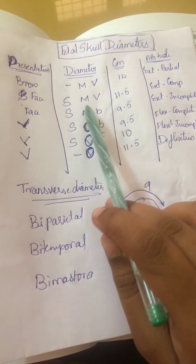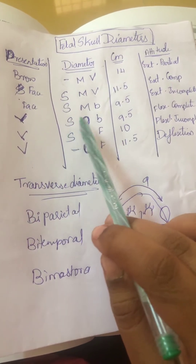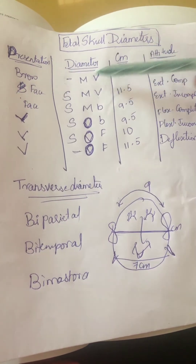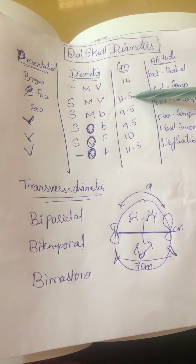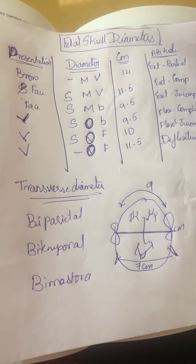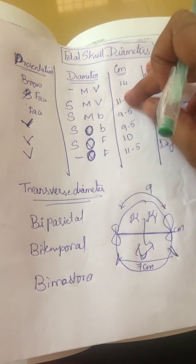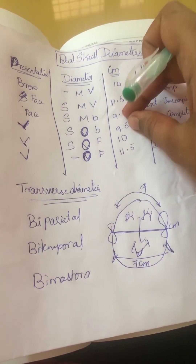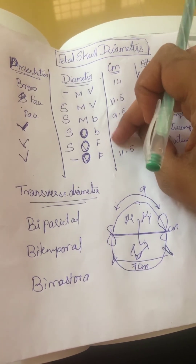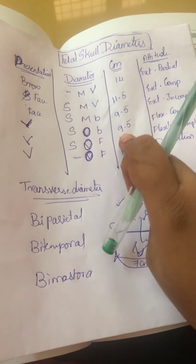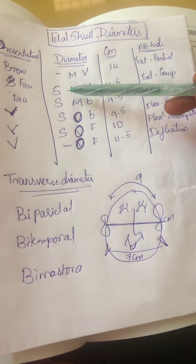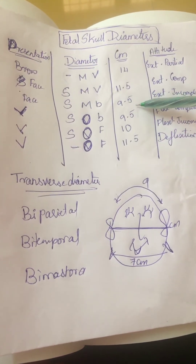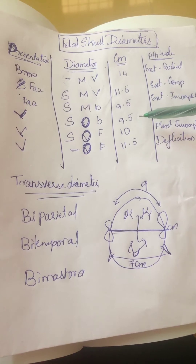So the six diameters are: mentovertical, submentovertical, submentobregmatic, suboccipitobregmatic, suboccipitofrontal, and occipitofrontal. In centimeters: the highest is mentovertical at 14 cm, followed by submentovertical at 11.5 cm, occipitofrontal at 11.5 cm, suboccipitofrontal at 10 cm, and both submentobregmatic and suboccipitobregmatic at 9.5 cm each.